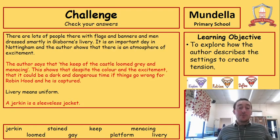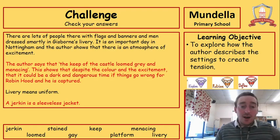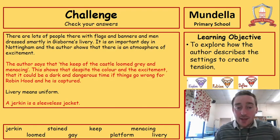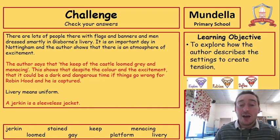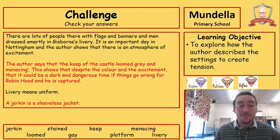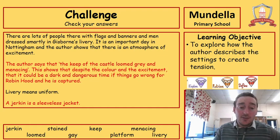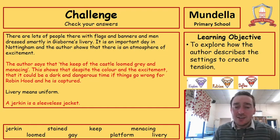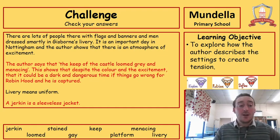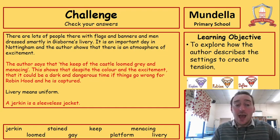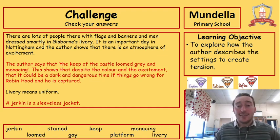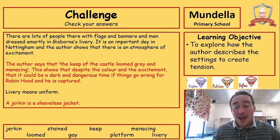There are lots of people there with flags and banners and men dressed smartly in Gisborne's livery. It's an important day in Nottingham and the author shows there is an atmosphere of excitement. The author says that the keep of the castle loomed grey and menacing. This shows that despite the colour and excitement, it could be a dark and dangerous time if things go wrong for Robin — if he is captured. We know that livery means uniform and that a jerkin is a sleeveless jacket. Well done for having a go at those.